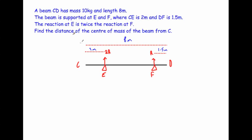In this question we've got a non-uniform beam CD with a mass of 10 kilograms and length of 8 metres. The beam is supported at E and F where CE is equal to 2 metres and DF is equal to 1.5 metres.